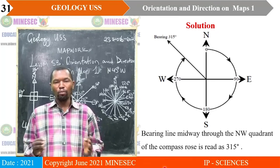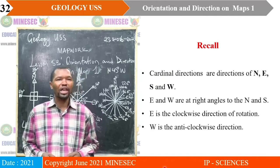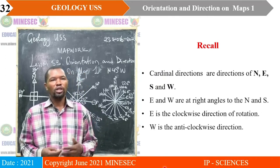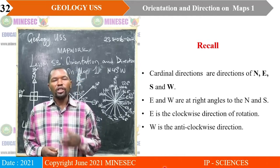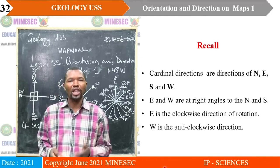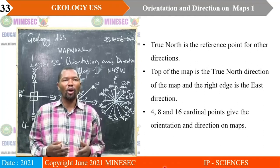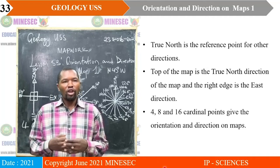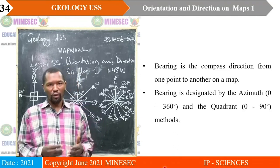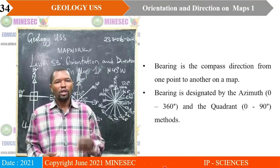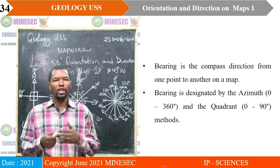Note that the azimuth method must always carry the bearing in three digits excluding the decimal places. Recall that cardinal directions are directions of north, east, south, and west, with east and west at right angles to north and south. East is the clockwise direction of rotation and west is the anticlockwise direction. The true north is the reference point for other directions, while the top of the map is the true north direction. The 4, 8, and 16 cardinal points give orientation and direction on maps, while bearing is the compass direction from one point to another, designated by the azimuth method (0 to 360 degrees) and the quadrant method (0 to 90 degrees).